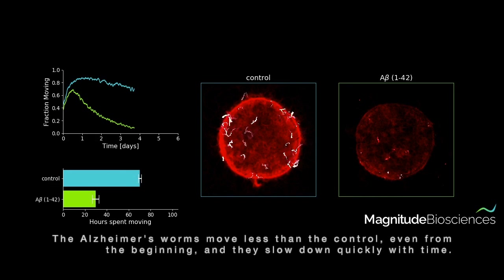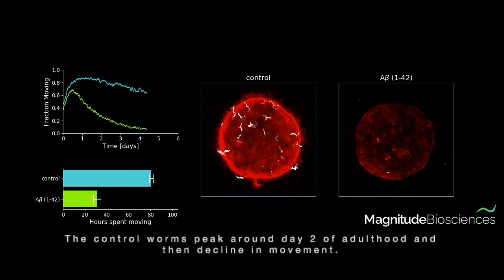The Alzheimer's worms move less than the control even from the beginning and they slow down quickly with time. The control worms peak around day two of adulthood and then decline in movement.